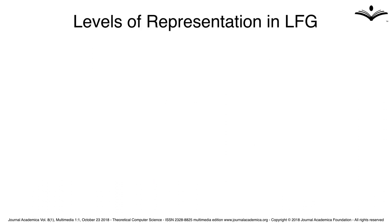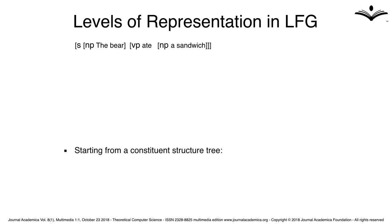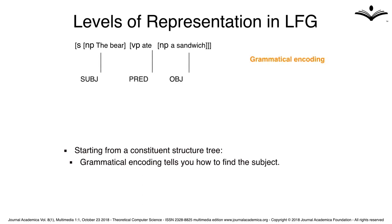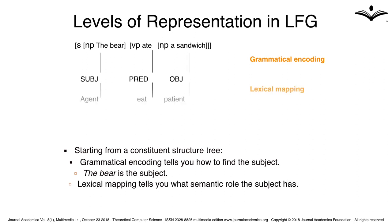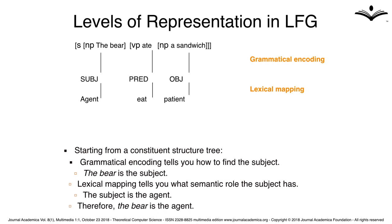How does this work? Take the sentence 'the beer ate a sandwich,' for example. Starting from a constituent structure tree, grammatical encoding tells you how to find the subject — the beer is the subject. Lexical mapping tells you what semantic role the subject has. Because the verb 'eat' as well as its parameters agent and patient are stored in the lexicon, the subject is the agent; therefore the beer is the agent.